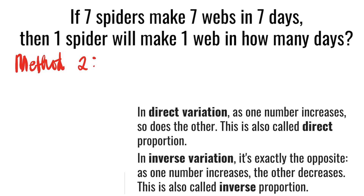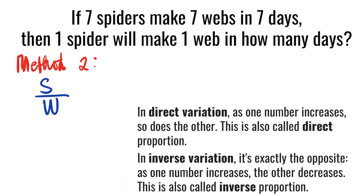So we set up an equation involving both inverse and direct proportion. The number of spiders is directly proportional to the number of webs — in formula form, that is S over W. The number of spiders is also inversely proportional to the number of days, giving us S times D equals K, the constant. So spiders are directly proportional to webs and inversely proportional to days.